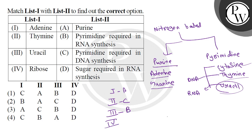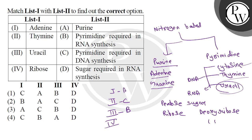For the fourth one, ribose sugar: we know that pentose sugar is present in nucleic acids. One type is ribose sugar, present in RNA, and the other is deoxyribose sugar, present in DNA. So the answer for the fourth one is D.